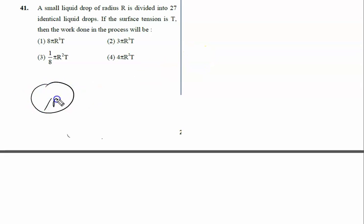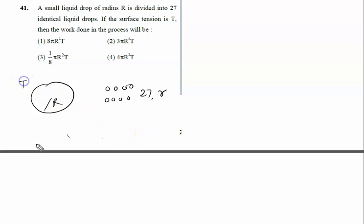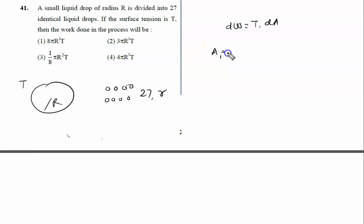A small liquid drop of radius R is divided into 27 droplets, each of radius small r. If the surface tension of the liquid is T, then what is the work done in this process? We know work done is given by T into dA. The initial surface area is 4πR².